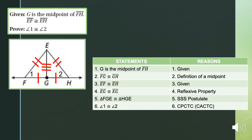Here is our formal proof. Statement one: G is the midpoint of line segment FH — given. Statement two: line segment FG is congruent to line segment GH by the definition of a midpoint. Statement three: line segment EF is congruent to line segment EH — given. Statement four: line segment EG is congruent to line segment EG by reflexive property. Statement five: triangle FGE is congruent to triangle HGE by the SSS (Side-Side-Side) postulate.